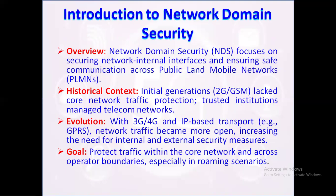However, with advancements like 3G and 4G, networks began using IP-based transports such as GPRS, which increased exposure to third-party and less trusted networks. This change highlighted the need for more rigorous security measures to protect data transmitted across network domains and between operators, particularly when users roam between networks. As networks advanced, NDS evolved to protect both internal traffic within the core network and communication across operator boundaries, mitigating risks associated with the open nature of IP-based traffic.